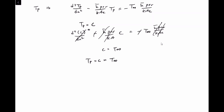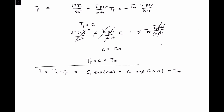The final step is to combine everything. T equals Th plus Tp, which equals C1·exp(mx) plus C2·exp(−mx) plus T-infinity. This gives us the full solution to the non-homogeneous ODE with the unknown constants present.